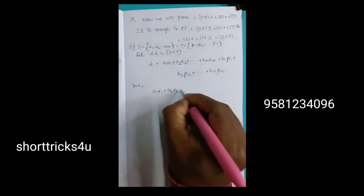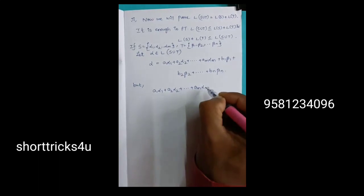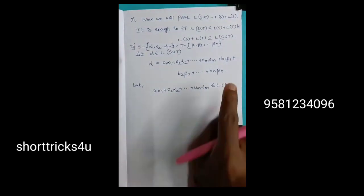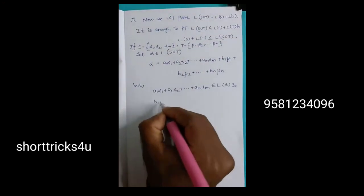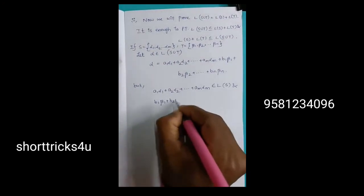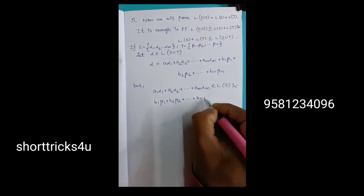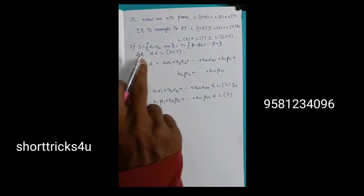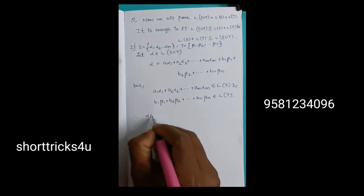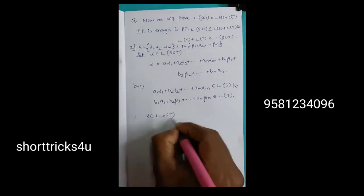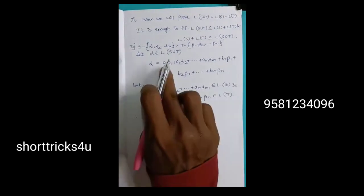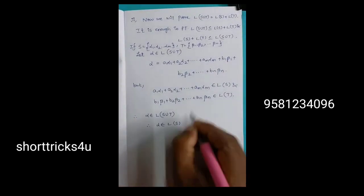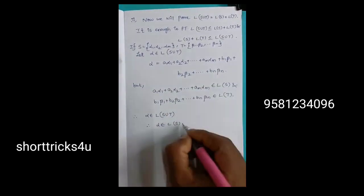A1, A2, ... — what is the individual in L of S? The value of S is a linear span. If you choose B1, B2, ..., Bn — what is the value of L of T? Alpha belongs to L of S union T. The value of alpha belongs to L of S, and the value of B belongs to L of T.